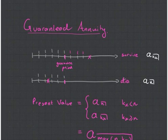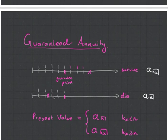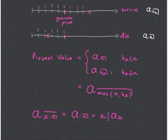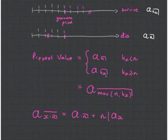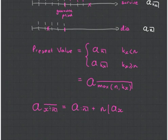Then we've got guaranteed annuities. These are kind of like term assurance but the other way around — so even if you die before the period, you're still going to get payments until that period, and then you'll get nothing. But if you still survive at the end of that period, it keeps going as if it was a whole life. This will be the most expensive out of all the annuities we've spoken about. Its formula is the maximum of either the set annuity or the whole life annuity — it's an addition of a simple annuity plus a deferred annuity. Remember, the bar over x and n means that both conditions have to fail in order for it to stop; if there's just a 1 above it, then it stops as soon as that condition fails.